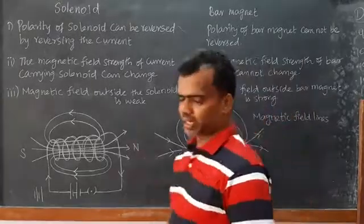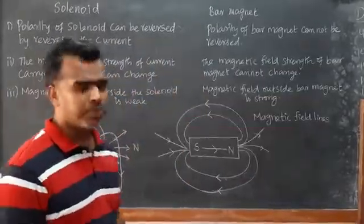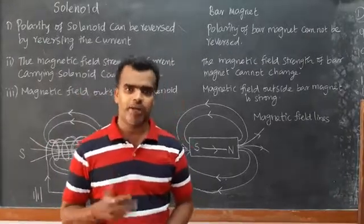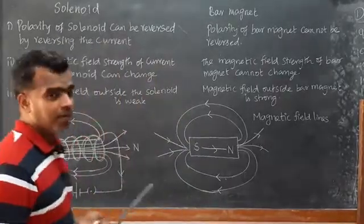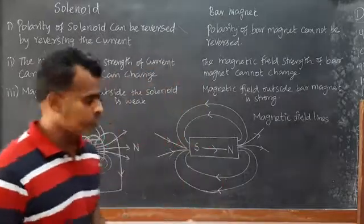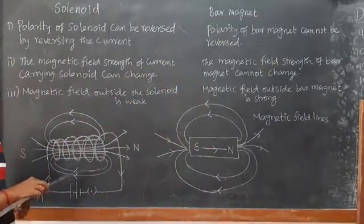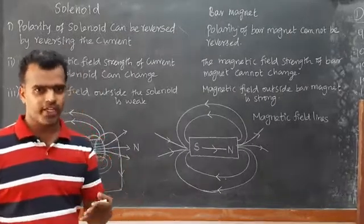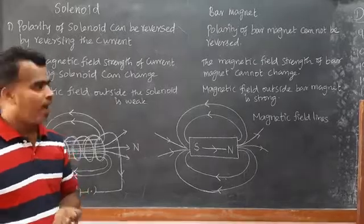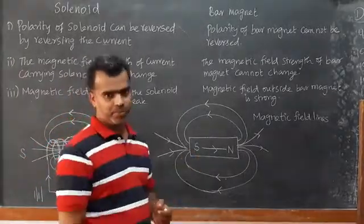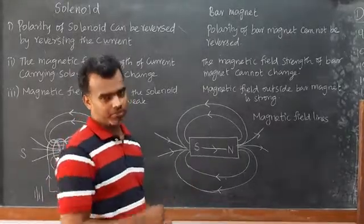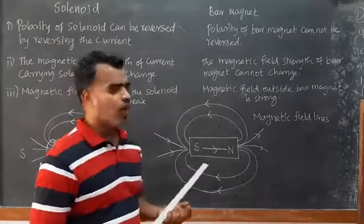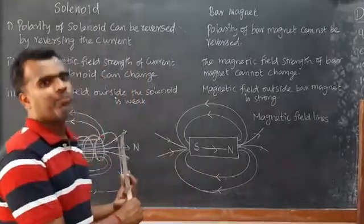Now, for the bar magnet, the magnetic field strength of the bar magnet cannot be changed. Also, the magnetic field outside the solenoid is weak, whereas the magnetic field outside the bar magnet is strong. So when comparing the solenoid to the bar magnet, these are the key differences.